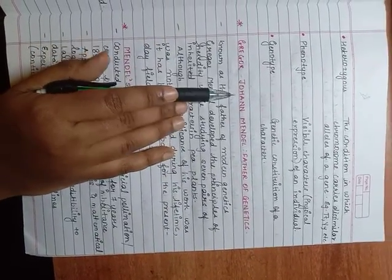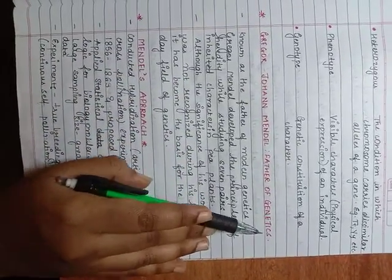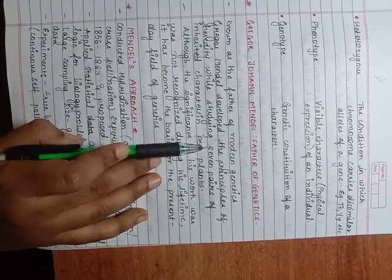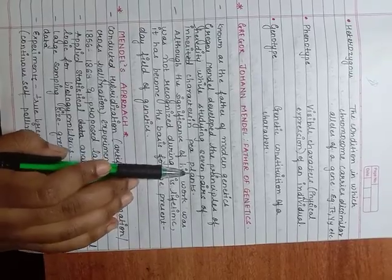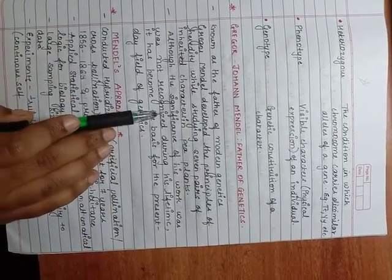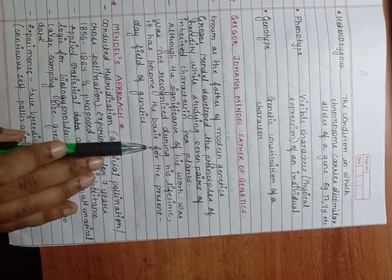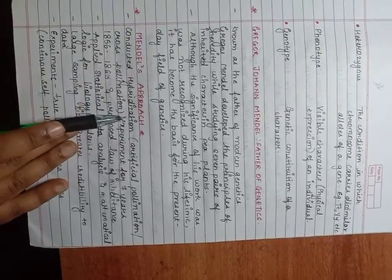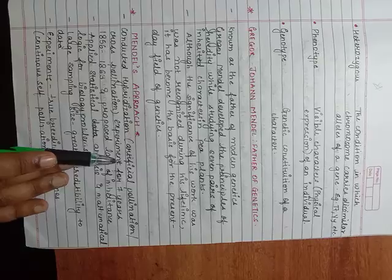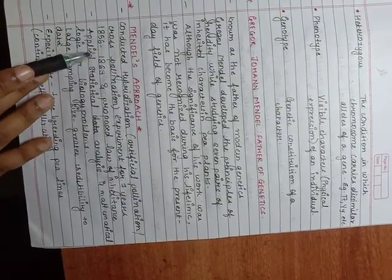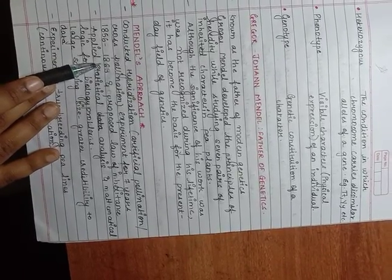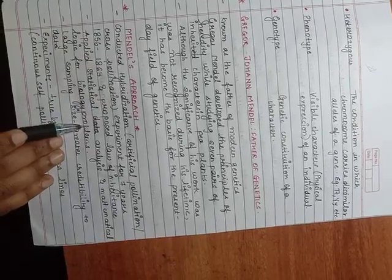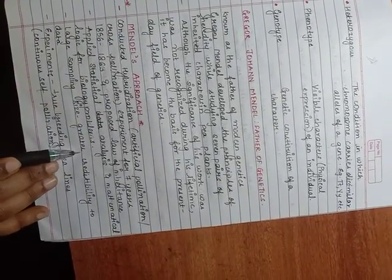Let us learn about Gregor Johann Mendel who is known as the father of genetics, the father of modern genetics. Gregor Mendel developed the principle of heredity while studying seven pairs of inherited characters in pea plants. Although the significance of his work was not recognized during his lifetime, it has become the basis for the present field of genetics. How was Mendel's approach? He conducted hybridization, artificial pollination or cross-pollination experiments for seven years, that is from 1856 to 1863, and proposed the law of inheritance. Applied statistical analysis and mathematical logic for biology problems.